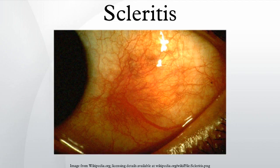Scleritis is a serious inflammatory disease that affects the white outer coating of the eye, known as the sclera. The disease is often contracted through association with other diseases of the body, such as granulomatosis with polyangiitis or rheumatoid arthritis.